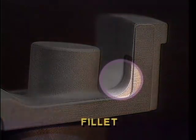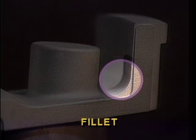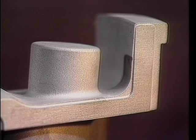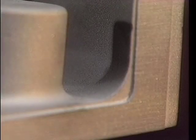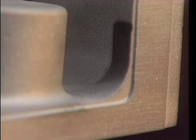A fillet, on the other hand, is a rounded corner of a part that curves inward. It increases the structural strength of the part by allowing additional metal in the intersection of two surfaces. As you can see, this fillet forms a rounded corner.